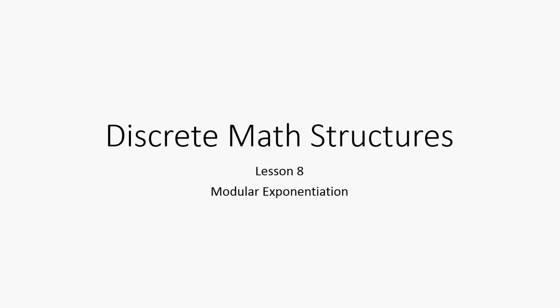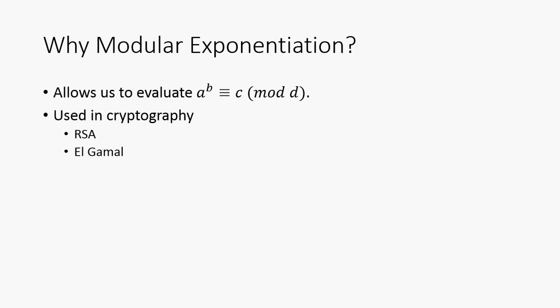Alright, welcome back to discrete math structures. This is lesson 8. We're going to be talking about modular exponentiation. So why are we discussing this? Well, it allows us to evaluate a to the b mod d, where a, b, and d are all integers. This is typically used in cryptography, for example RSA and Elgamal, two very popular public key cryptosystems.